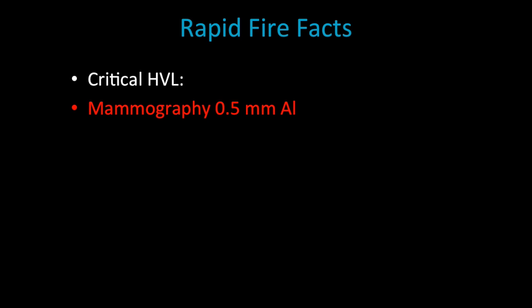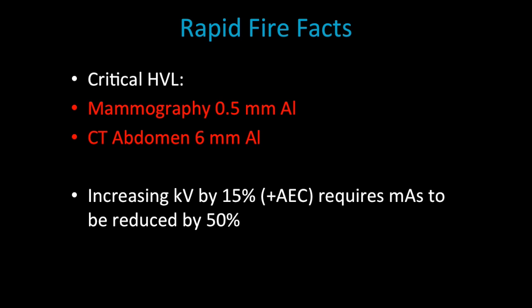Going back to the rapid fire facts format, we know that our critical HVL for mammography is 0.5 millimeters of aluminum, and for CT of the abdomen is six millimeters of aluminum. This is important for patient safety, so you should know it. Increasing the kVp by 15 percent we know will cause an increase in photons above four, so with automatic exposure control we will be required to reduce mAs by approximately 50 percent, because by increasing our kVp by 15 percent our mAs will be increasing by around 50 to 60 percent. So we don't need those extra mAs, therefore we reduce those mAs to achieve savings in radiation dose, or to at the very least not increase it.